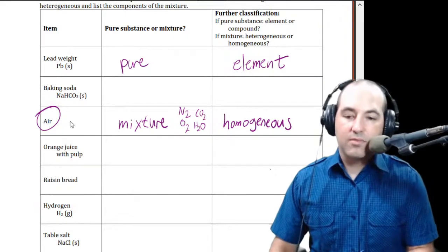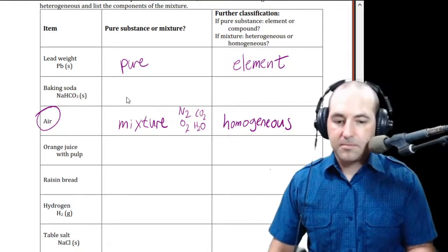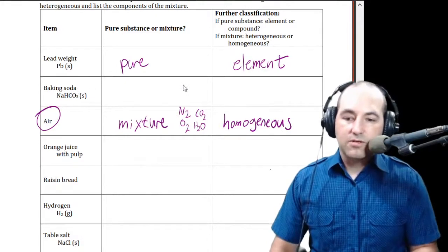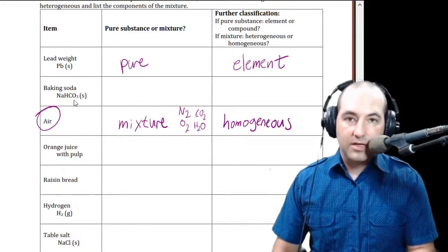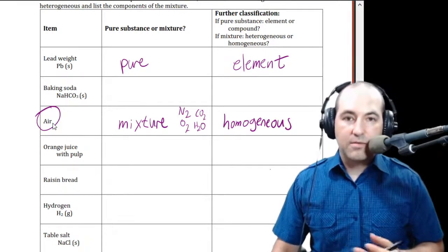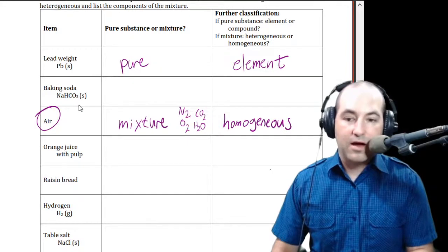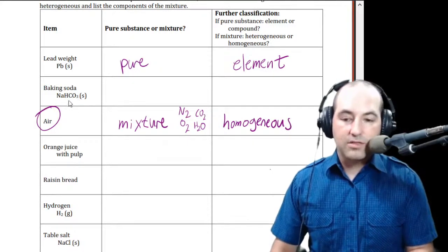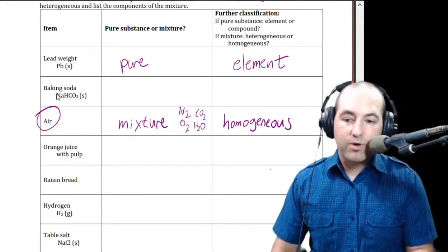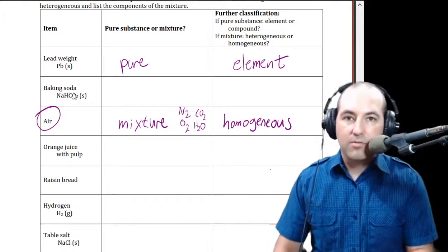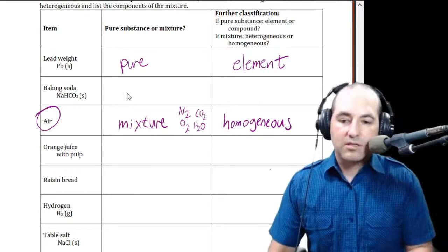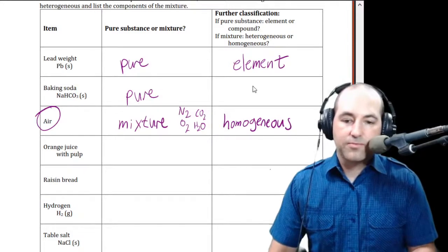Next we've got baking soda — pure substance or mixture? It's clearly made of multiple elements, but we have to decide: does that make it a mixture or a compound? In this case it's a compound because those atoms are chemically bound together. If we were to separate the sodium, carbon, or oxygen, that would make whole new different compounds. So that makes this also a pure substance and a compound.